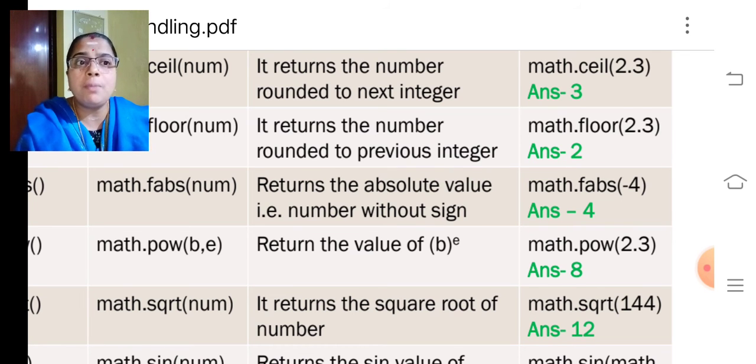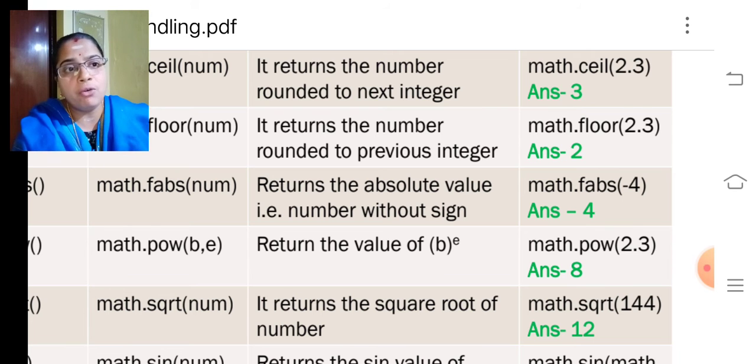Then, math floor 2.3, it will give the previous integer 2. Math fabs, that is absolute value, minus 4, the absolute value is 4.